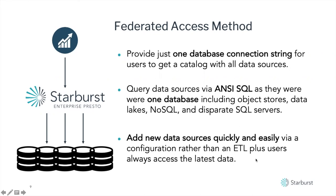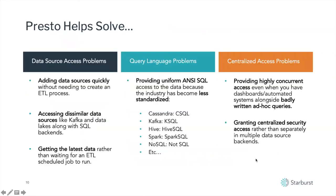Really importantly, you can actually normalize that with a federation system to ANSI SQL. As you've probably seen before, you have many different flavors of SQL that get created every time we have a new type of data source like Cassandra, Kafka, Hive, Spark, and of course NoSQL and many others. The goal and what you can do with a platform like this — the flexibility that you have — is actually pretty amazing. First of all, accessing different data sources and adding them quickly to the platform. All you need is a connection string.